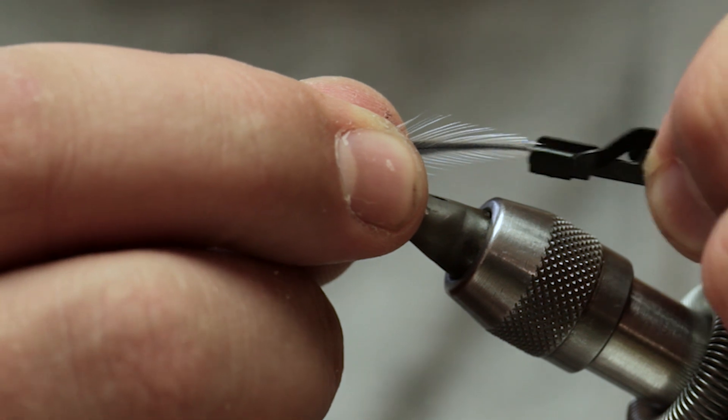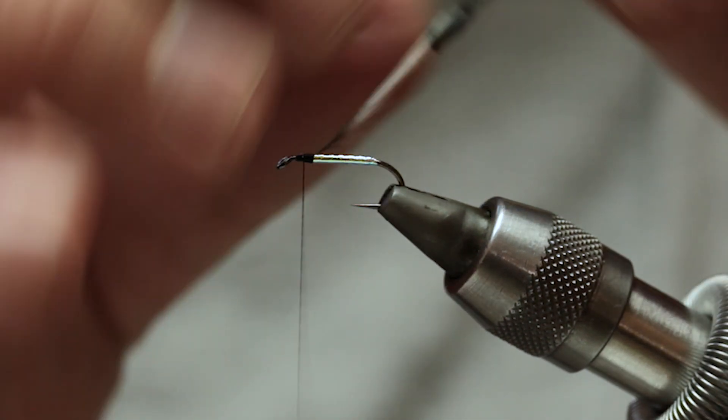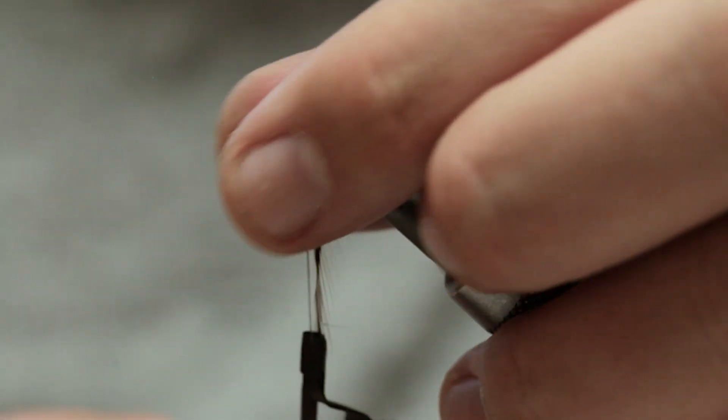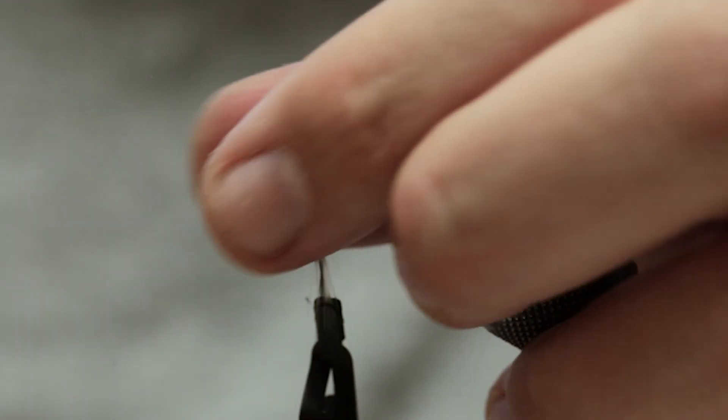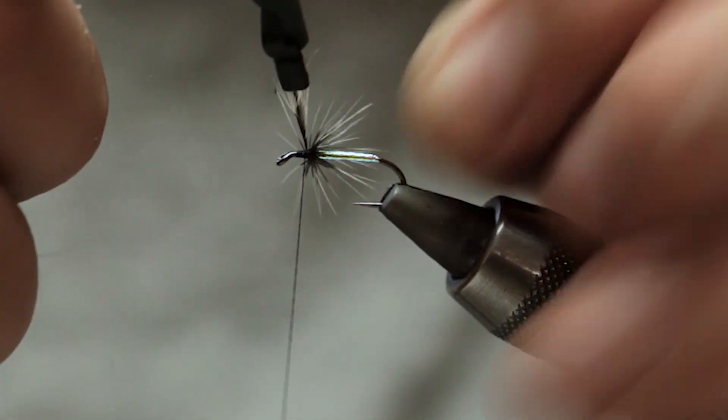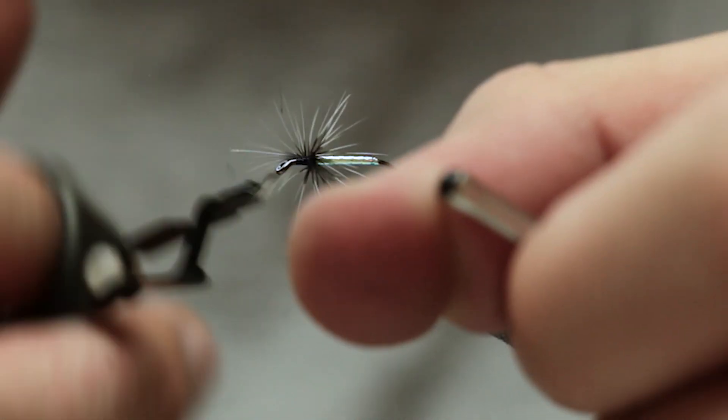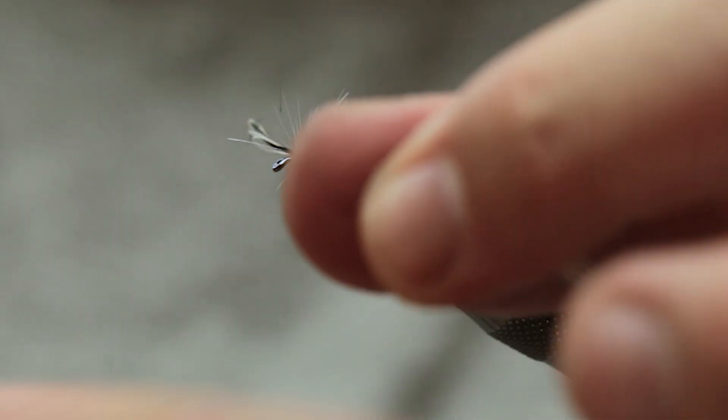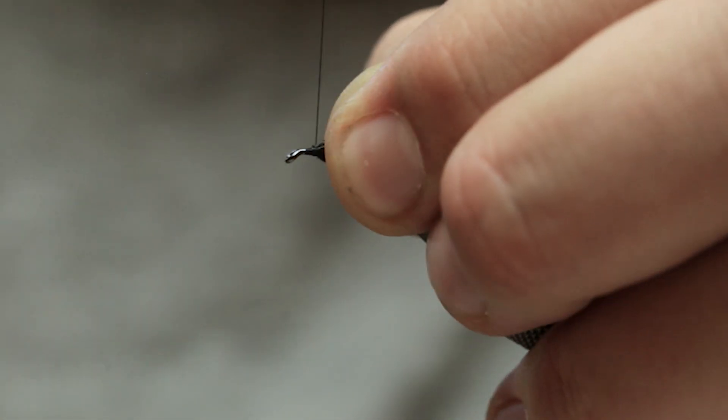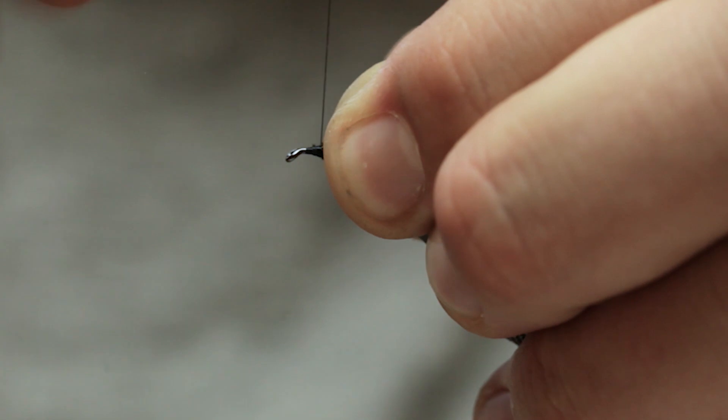Okay, hackle pliers. Then we're going to do a couple of turns. So that's three turns there. Catch off. Hook everything back. Catch off.